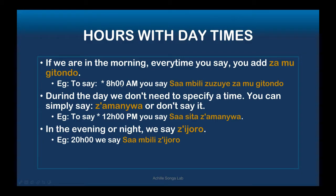In the evening you can say 'nijoro' after the hour. During the middle of the day, you don't need to specify — you can just say the hour. For example, for 12 PM you say 'sasta' or 'sasta amanywa.' 'Amanywa' means during the day, so 'sasta amanywa' clearly means 12 o'clock midday.